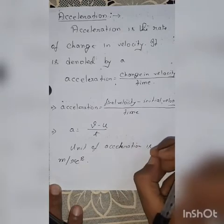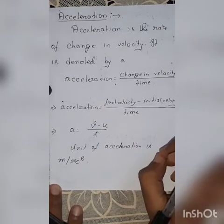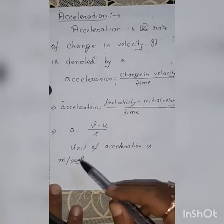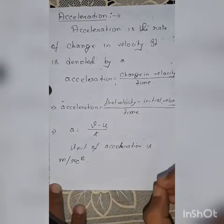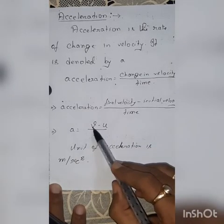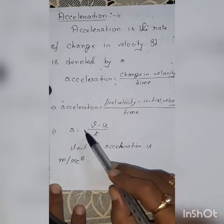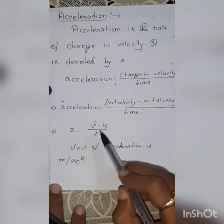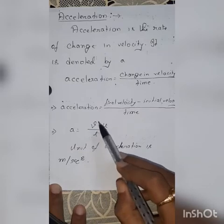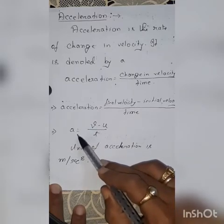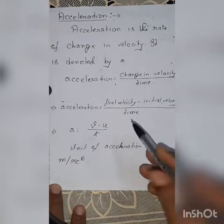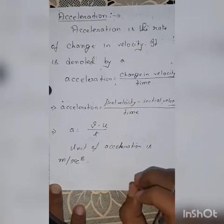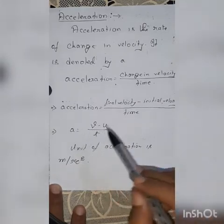With the help of this formula, we can find out the acceleration. Unit of acceleration is meter per second square. Acceleration can be both positive as well as negative. If the final velocity is greater than the initial velocity, acceleration will be negative. In that case, we will rename acceleration as retardation. Whenever we find the value of A to be negative, we call it retardation.